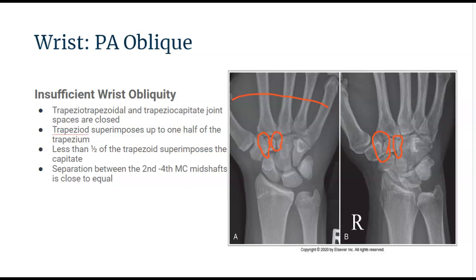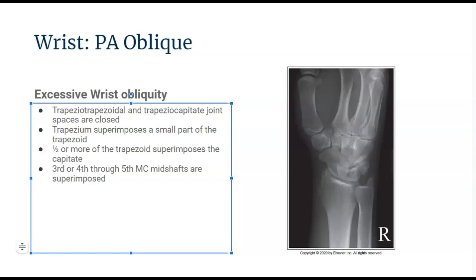This articulation — more characteristic of a PA projection — is open where it should be closed. The first projection shows less than 45 degrees of rotation, probably around 10 degrees, whereas projection B is probably just shy of 45 degrees, maybe in the 20 to 30 degree range — not quite sufficient rotation. Please refer to part two for excessive wrist obliquity.